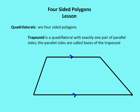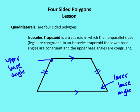A trapezoid is a quadrilateral with exactly one pair of parallel sides. The parallel sides are typically shown as the top and bottom, though the figure can be oriented either way. The parallel sides are called the bases of the trapezoid. An isosceles trapezoid is a trapezoid in which the non-parallel sides — the legs — are congruent. In an isosceles trapezoid, the lower base angles are congruent and the upper base angles are also congruent.